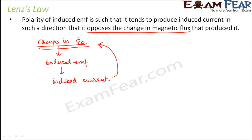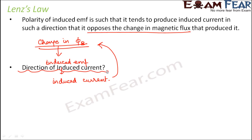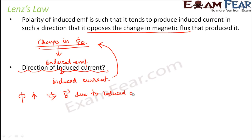Now that we have discussed the opposition between induced current and the change in magnetic flux, it becomes important to talk about the direction of induced current. This is a tip to find the direction: whenever the magnetic flux increases, the magnetic field due to the induced current is opposite to the existing magnetic field.